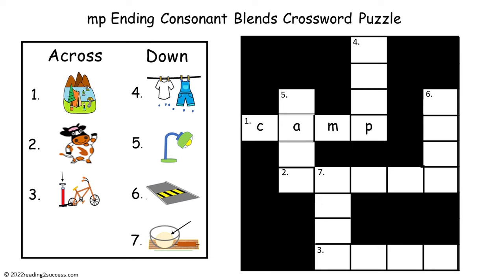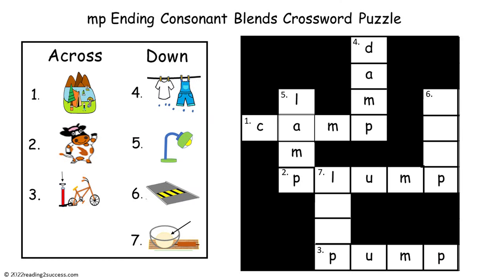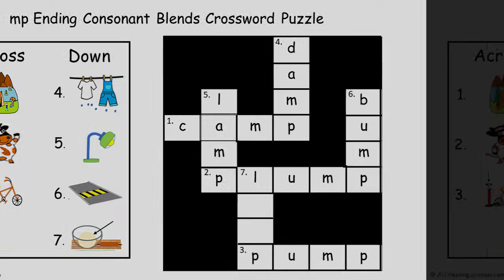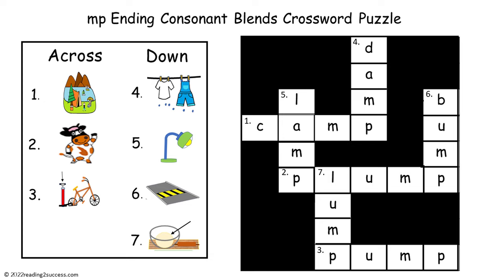One across: camp (C-A-M-P). Two across: plump (P-L-U-M-P). Three across: pump (P-U-M-P). Four down: damp (D-A-M-P). Five down: lamp (L-A-M-P). Six down: bump. And the last one: lump (L-U-M-P).